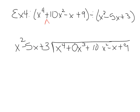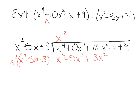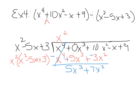x squared times what makes x to the 4th? That would be x squared. Multiply x squared times the divisor and write underneath: x to the 4th minus 5x cubed plus 3x squared. If I had not put that placeholder term in, these like terms would not have lined up correctly. In the subtract, change signs: negative, positive, negative. First terms cancel — make sure they are different signs — then combine like terms vertically. This becomes 5x cubed plus 7x squared. Bring down negative x.